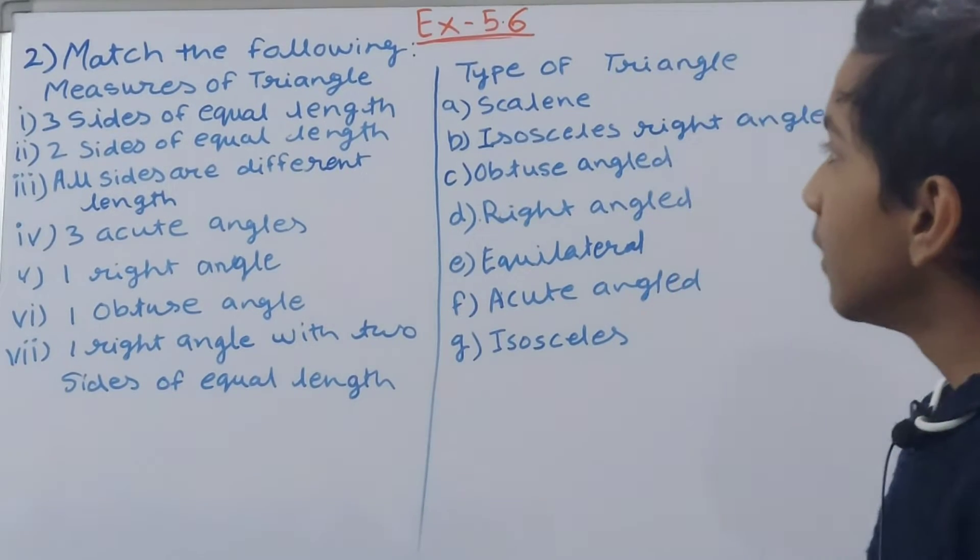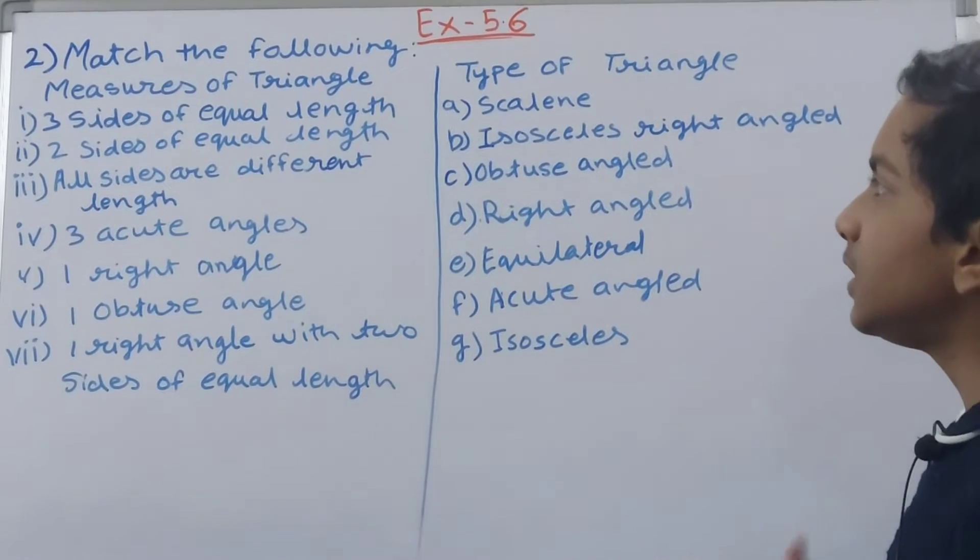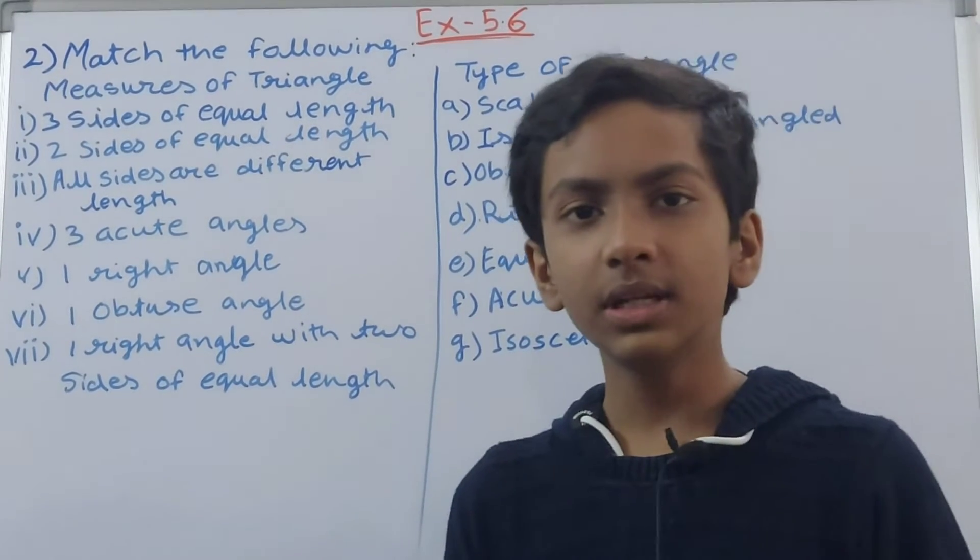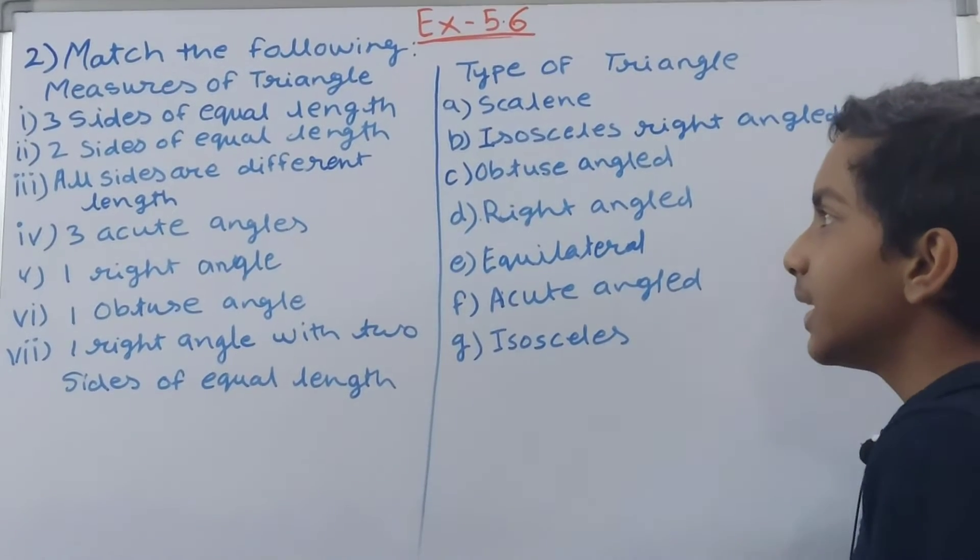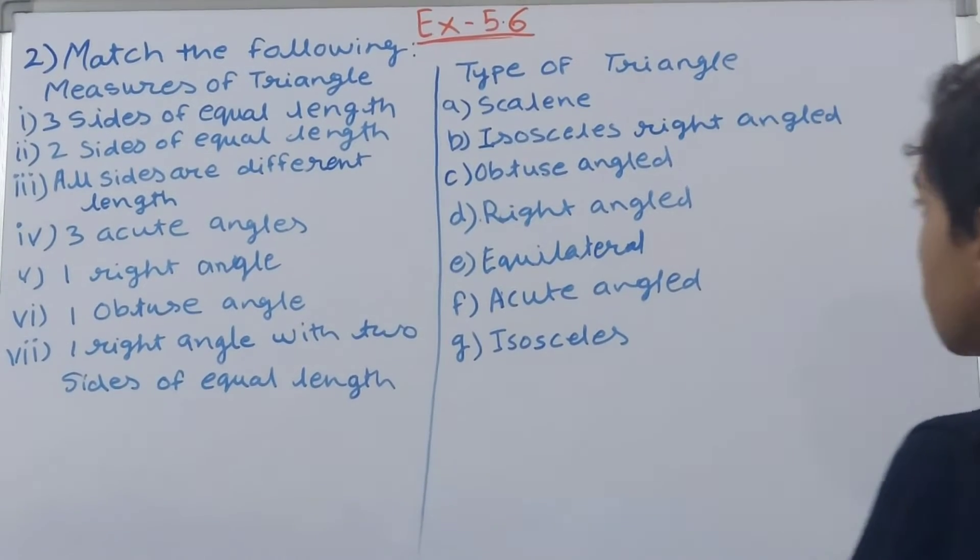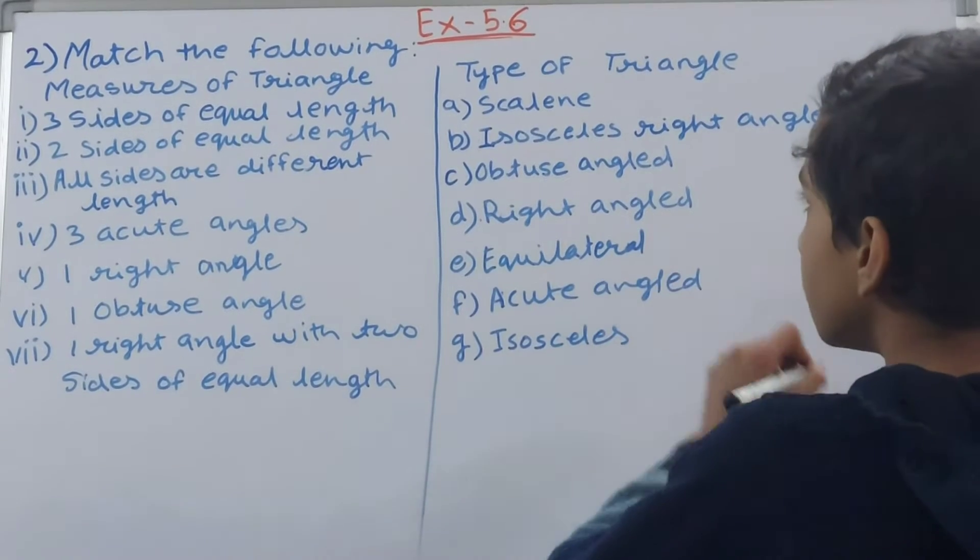First, three sides of equal length. Whenever in a triangle there are three equal sides and they are of equal length, that means it is an equilateral triangle. We have done this before, so we will write one over here.